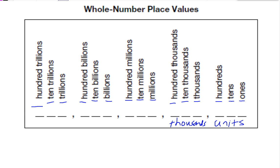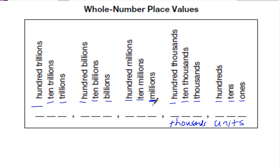It's important to remember that for each set of numbers, it always goes the number itself — so millions, or one million — then one, ten, hundred. That pattern repeats for each group, and that's how we do our place values for the whole numbers.